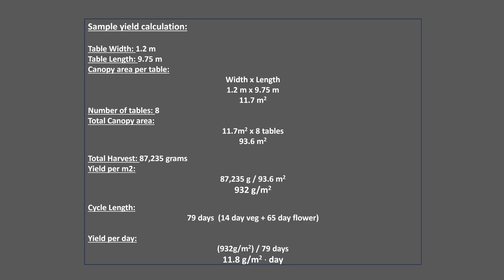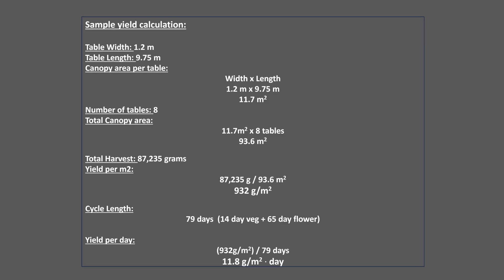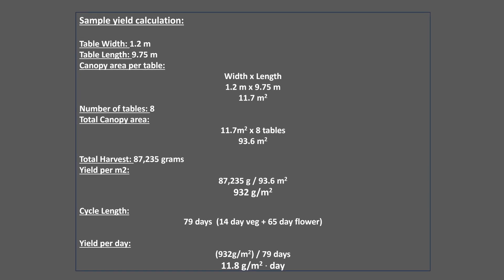You can then divide that number by the number of days it took to complete the cycle — usually between 47 to 75 days for flowering. If you veg in your room, you should also consider that. So let's say 14 days of veg plus another 65 days of flower — that's the total length for one individual cycle.